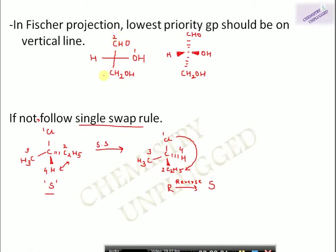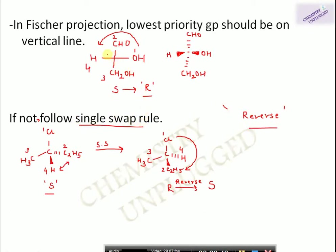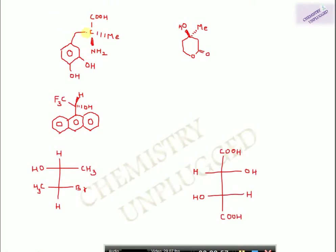Similarly for Fischer projection: when the lowest priority group is not on the vertical line, number the molecule first according to priority rules and determine the apparent configuration. If it appears to be S, reverse the order — the actual configuration is R. Remember: in wedge projection use the single swap and reverse; in Fischer projection, determine the configuration then reverse it.